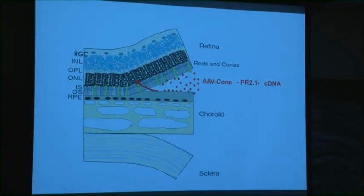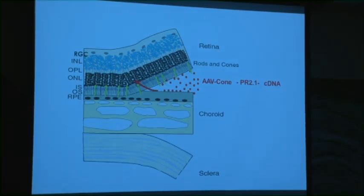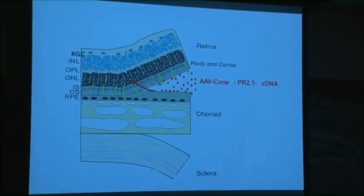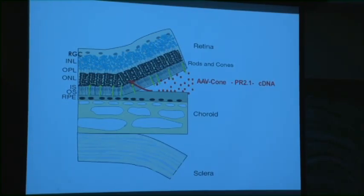A promoter called PR2.1, which was initially designed by Jeremy Nathans — he proved that this PR2.1 promoter, which is a human red cone opsin promoter, will in fact drive cone-specific expression in a transgenic animal. So we've been using his promoter for many years now.